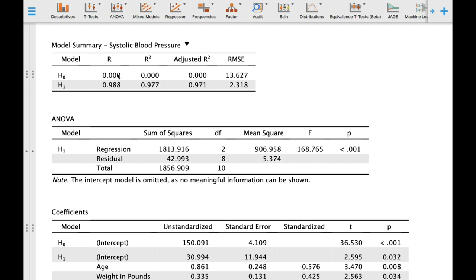The R-value is 0.988, and the R-square value is 0.977. So let us first go into the R-value.